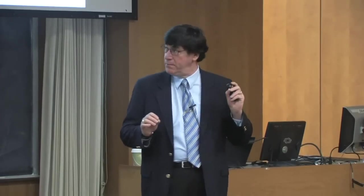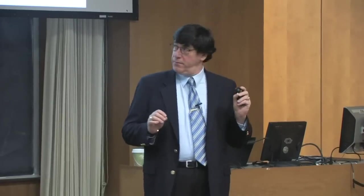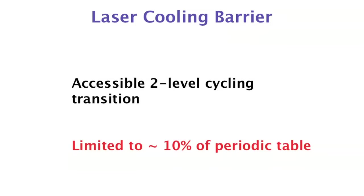You might ask: what are the barriers of laser cooling? On one hand it works perfectly — we can take atoms from room temperature and bring them down to near absolute zero. But laser cooling is not a general method. Because it uses photons repetitively for their momentum, you have to scatter a very large number of photons per atom, which requires a very simple internal two-level structure.